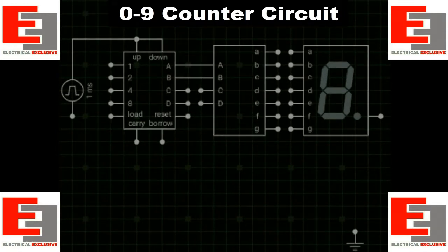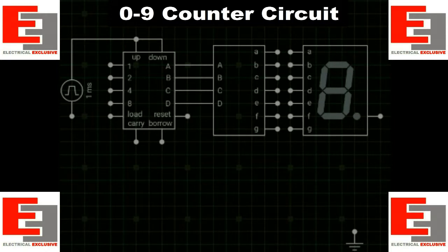Connect C to C terminal, and D to the D terminal. Then we need to connect all the output terminals of the 7-segment decoder to all 8 terminals of the 7-segment display.